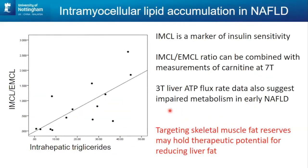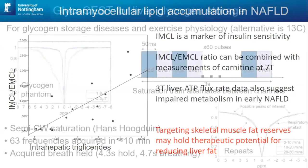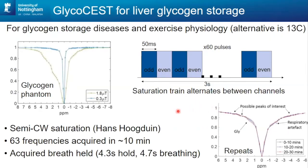IMCL is a marker of insulin sensitivity, and we combine it with measurements of carnitine at 7T and also 3T ATP flux rates. At the moment we only do proton and carbon-13 at 7T, not phosphorus. We're also doing CEST at 7T — it's a big win for 7T. We're trying to do CEST in the body, and I'm doing quite a lot of work looking at collagen spectroscopic CEST as a marker of fibrosis, working at 7T with the aim to transfer that to 3T. We've also been looking at glycoCEST as a potential alternative to 13C for studying glycogen.